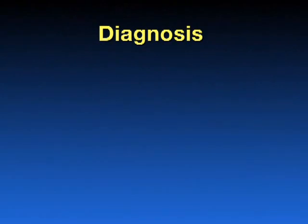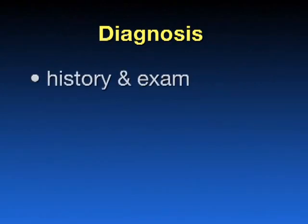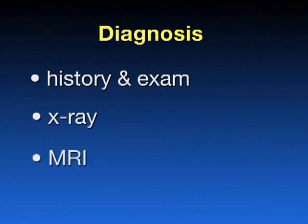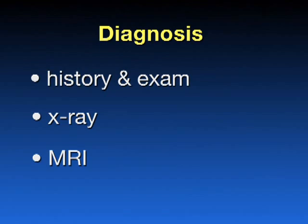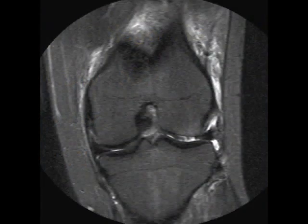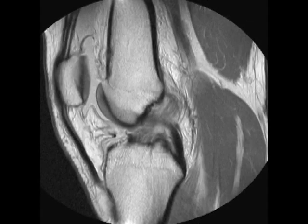A diagnosis is usually made by history and clinical exam. An x-ray is obtained to assess for any fracture. An MRI is often considered if findings are inconclusive. An MRI reveals other injuries to the knee such as meniscus tears, ligament or cartilage damage, and occult fractures.